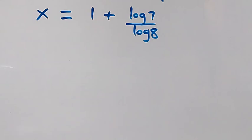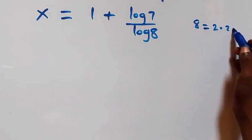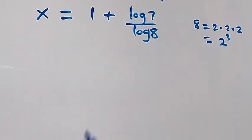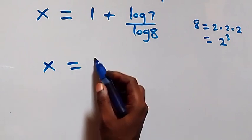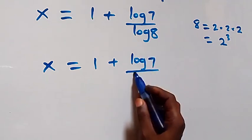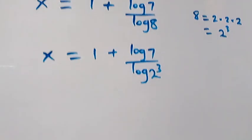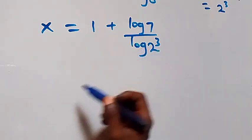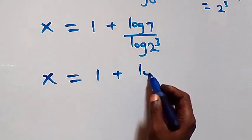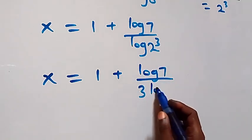We can also reduce this since 8 equals 2 times 2 times 2, which is 2 raised to power 3. So x equals log 7 over log(2³). Applying the power rule, the 3 comes down, and we have x equals 1 plus log 7 over 3·log 2.